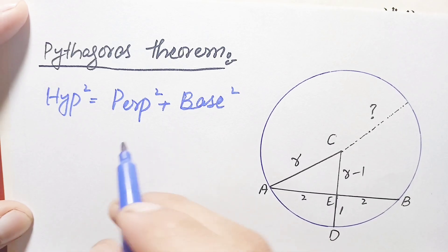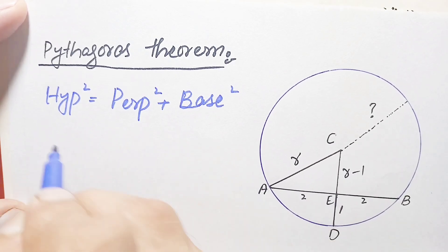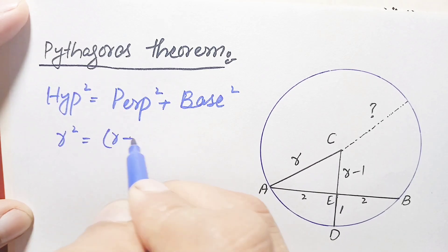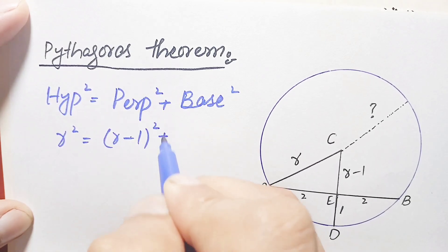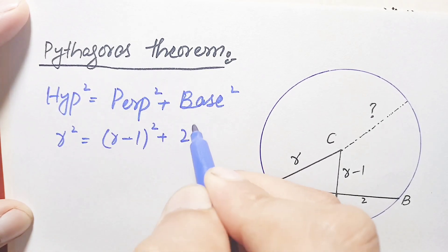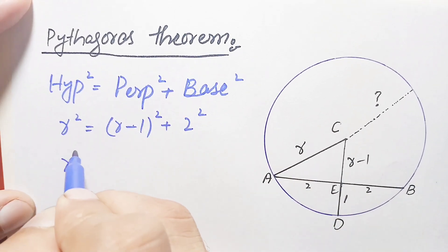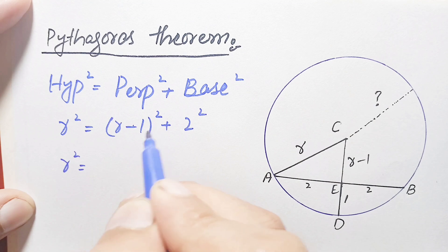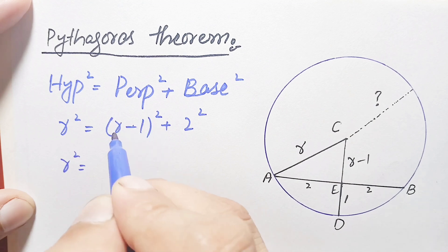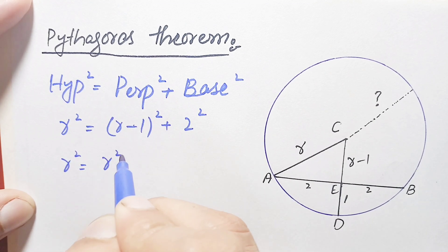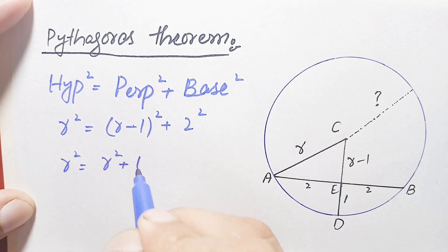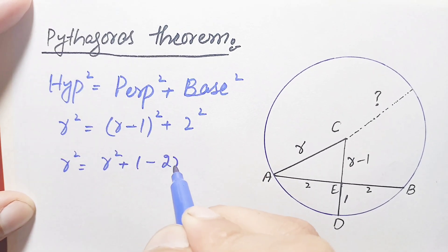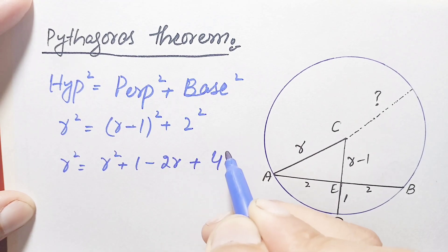Here our hypotenuse is r, perpendicular is r minus one, and base is two units. Substituting: r² = (r − 1)² + 2². Expanding using the algebraic identity (a − b)² = a² + b² − 2ab, this becomes r² = r² + 1 − 2r + 4.